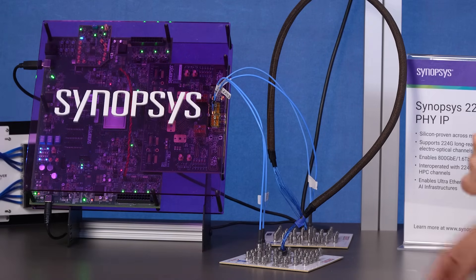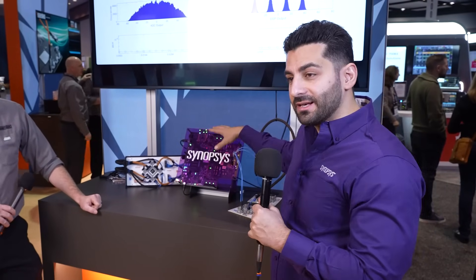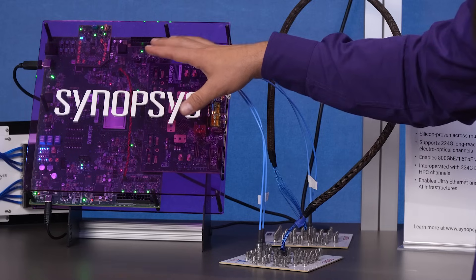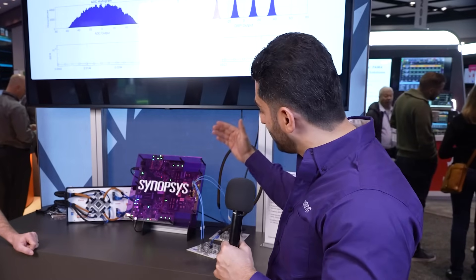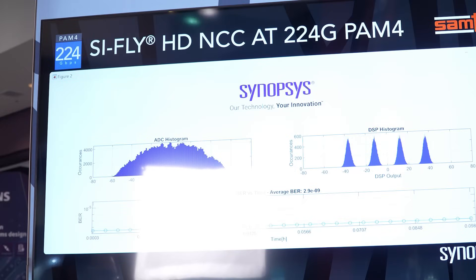As you can see here, this is a Synopsys test chip — a 224 gig PHY IP test chip underneath the socket. This is the backbone IP to enable AI interconnects, data center scale-out and scale-up, as well as 1.6 terabit per second solutions. The test chip is providing a pattern going outside via TX to the Samtec channel and back to our RX side, where a DSP is refining the eye performance and signals. We are showing performance over 40 dB channel loss.